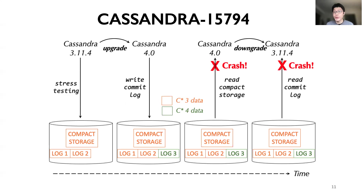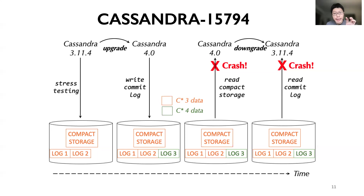This Cassandra failure was detected by DUP tester by running stress testing in a full-stop upgrade scenario. It not only prevents the system from successfully upgrading, but also from successfully downgrading. In this figure, time flows from left to right; orange data is written by the old Cassandra version, and green data is written by the new version. During stress testing, the old Cassandra version writes data in a special format called compact storage. After upgrade, Cassandra appends its commit log (write-ahead log) to disk, then loads data from disk and immediately crashes because the new version cannot handle compact storage. Downgrading to the old version also crashes because it cannot handle the new version's commit log.